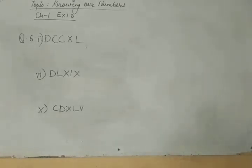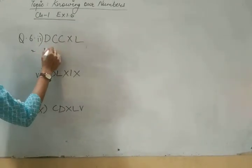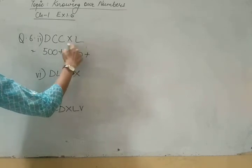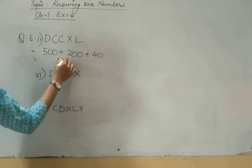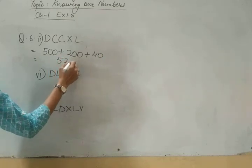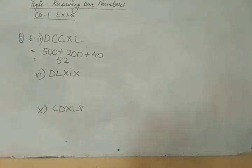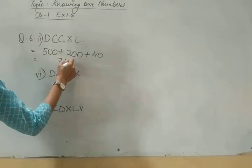Now in sixth question, again you have to write it in the Hindu Arabic. For D, we will write 500. For C, we will write 200 and XL means 40. 740. Clear?